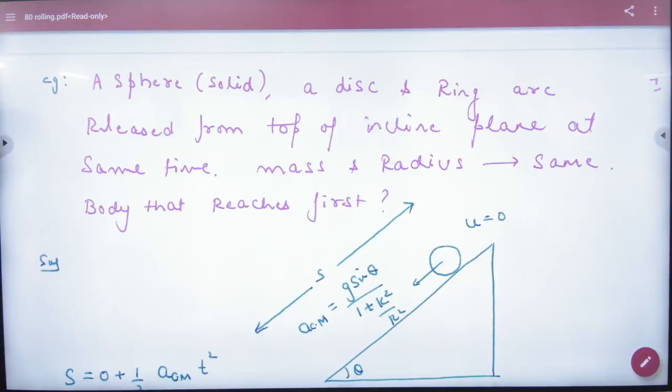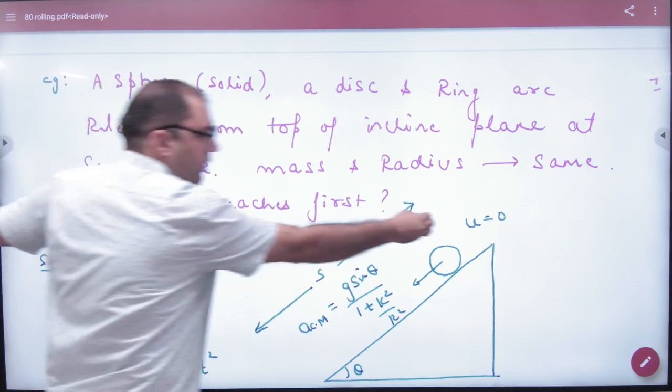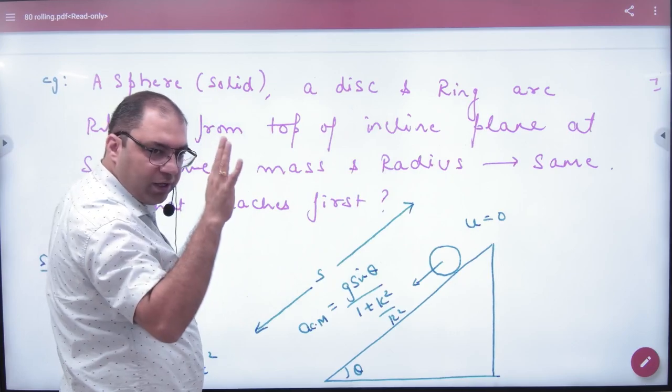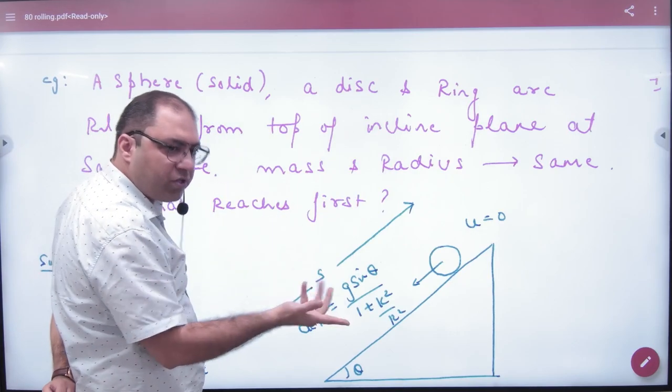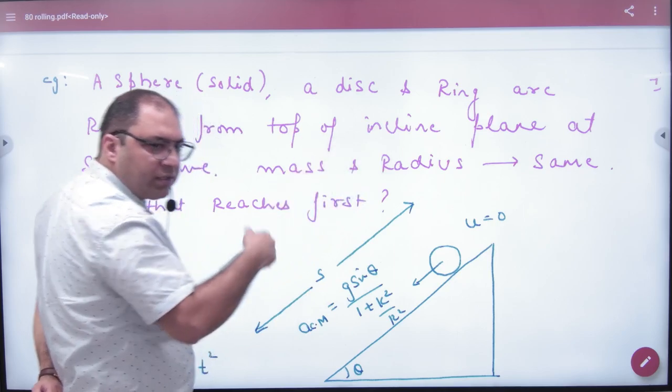The question is, there is a solid sphere, a disk and a ring. We have left them from the inclined plane. Assuming friction is the same, so μ is equal to zero. This will roll down.